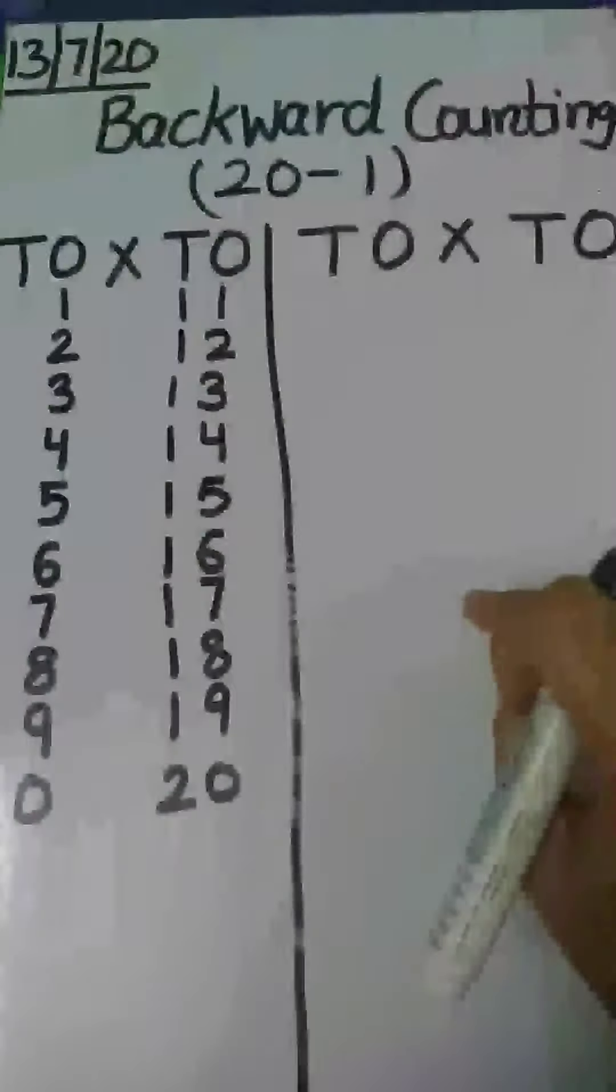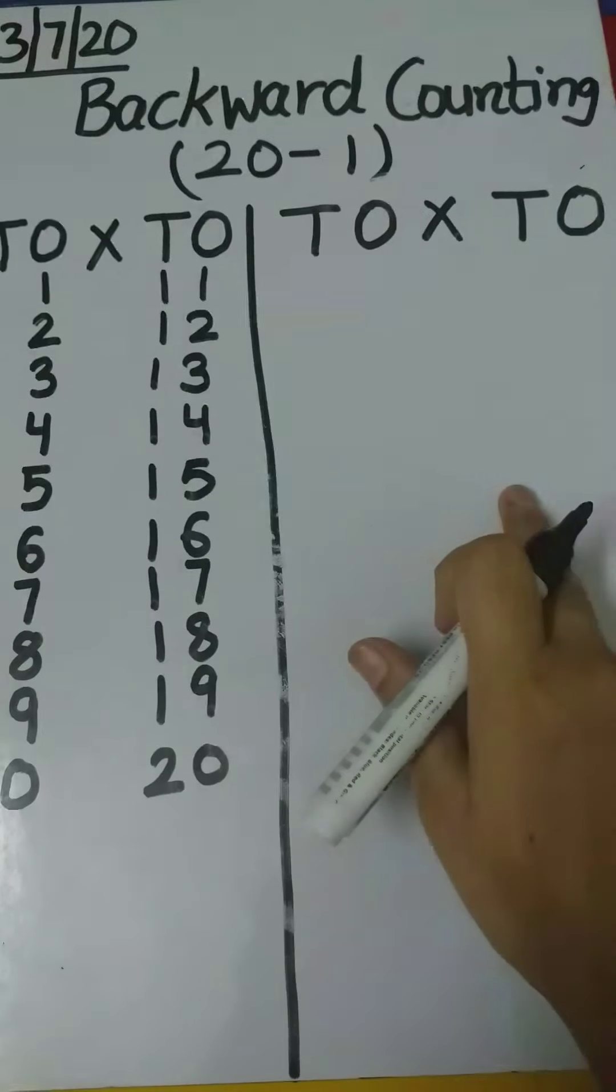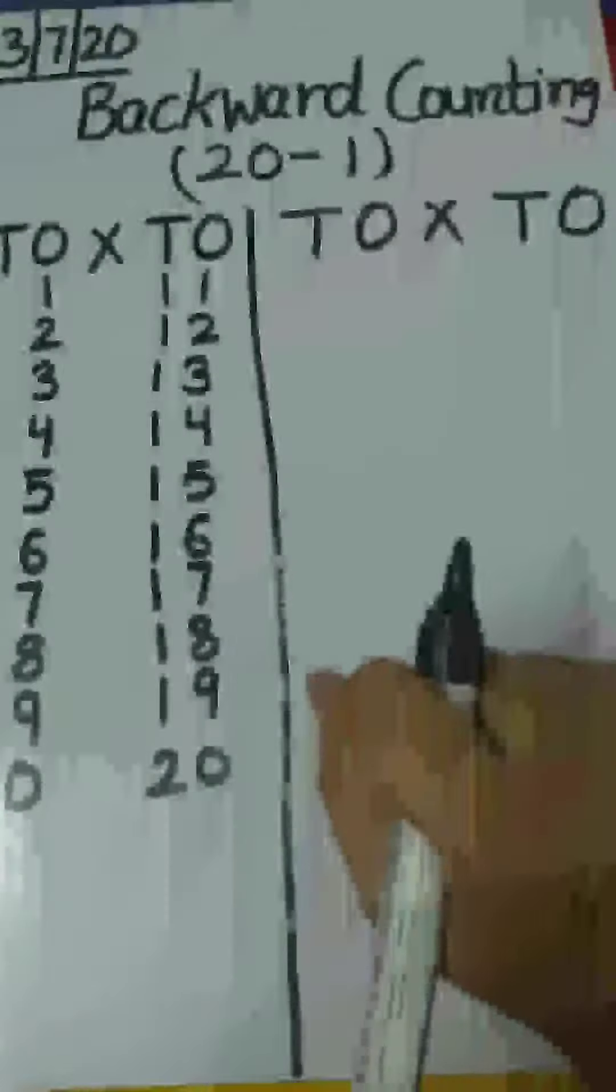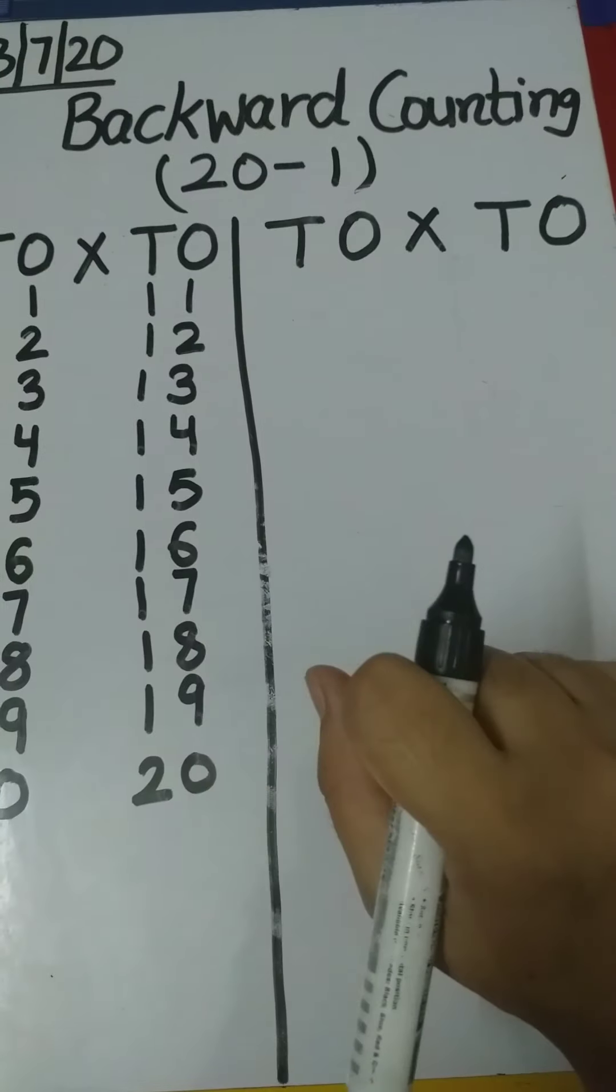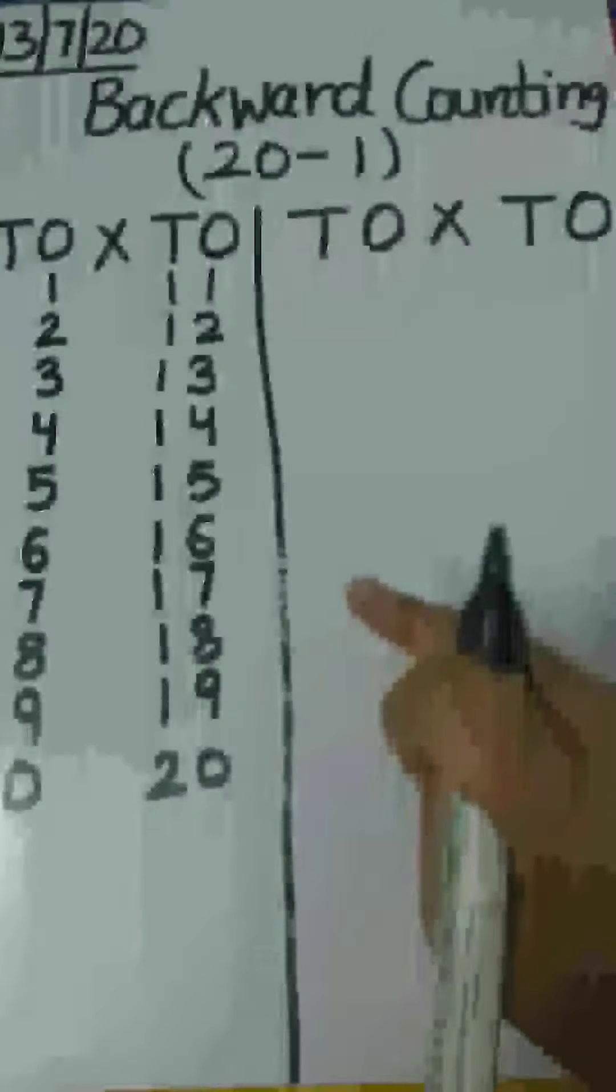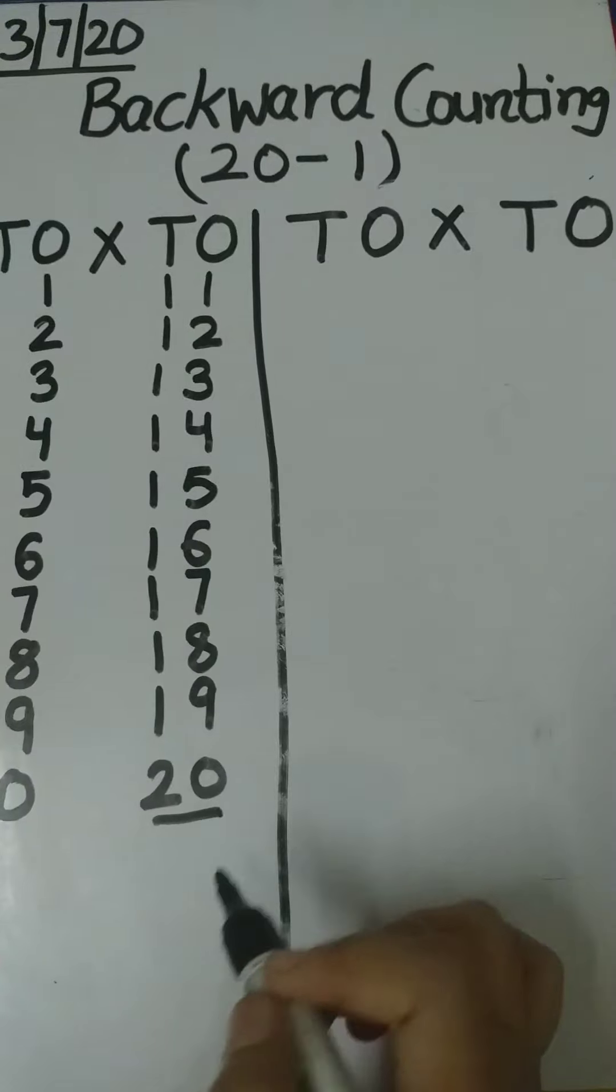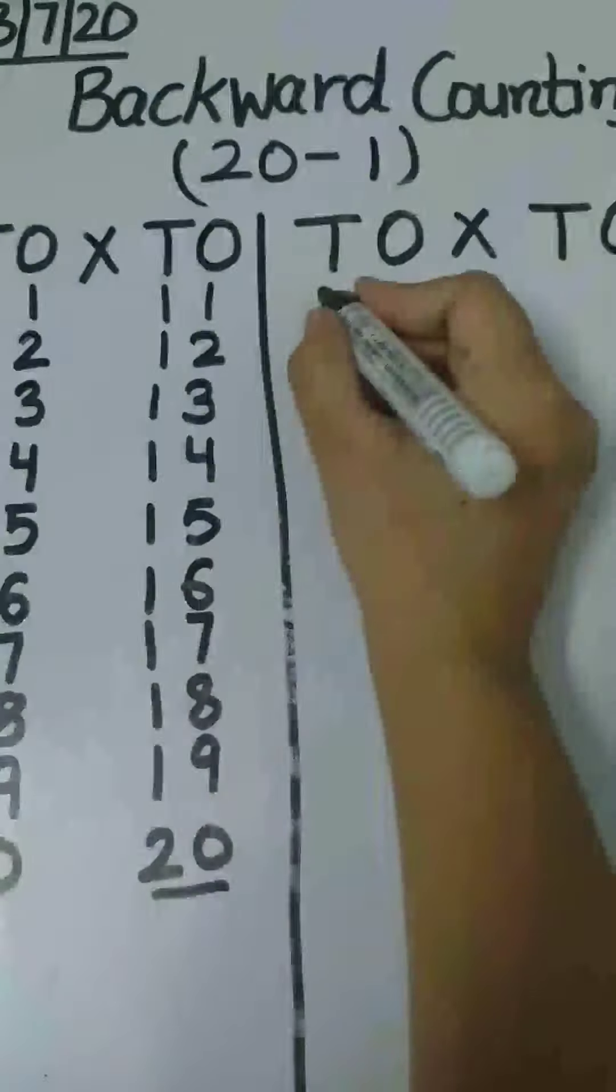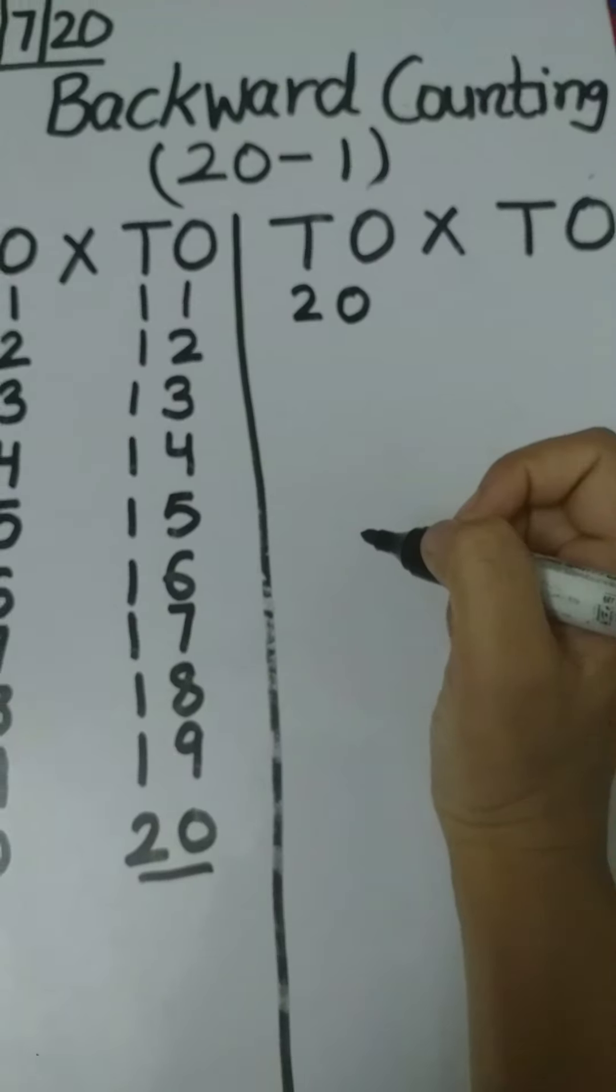So now children, we will do backward counting here from 20 to 1. So how we will do backward counting? We have to start from 20. 20.